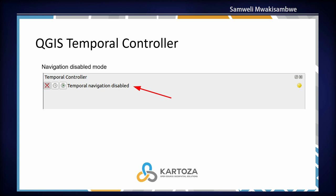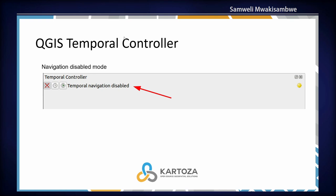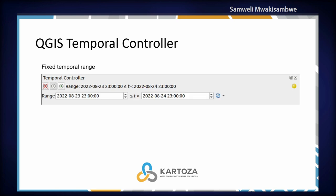By default, the Temporal Controller has a disabled mode — navigation is disabled. When you download QGIS, the Temporal Controller is disabled by default. When you access it using the clock icon on the toolbar, it will pop up in this disabled mode. This was designed so as not to confuse users when they first open it. There is also a fixed Temporal Controller mode, which you can use to filter and show only the layers that fit within a specified range — for example, layers ranging from the 23rd to the 24th.